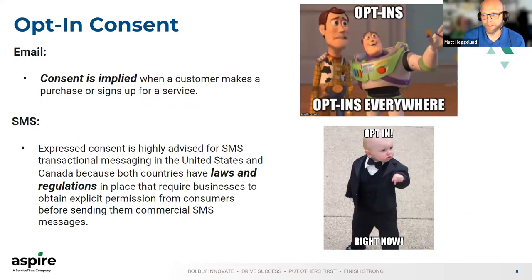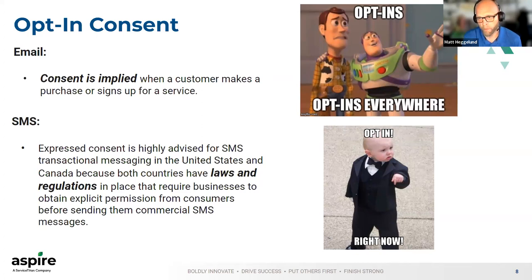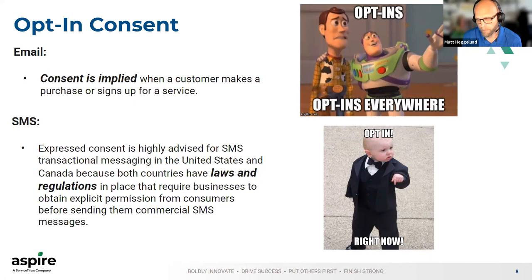Now we'll talk about transactional messaging and what it means from an opt-in standpoint. Email and SMS are both treated differently, and transactional emails or communication are different than promotional. With email, transactional consent is sort of implied — I'm getting your email to complete a transaction, which just means I'm okay to leverage that to send you information about the transactions or services you've purchased. Things showing how things are progressing through a workflow or shipping are basically open if you have that email address.